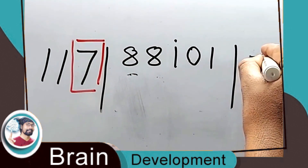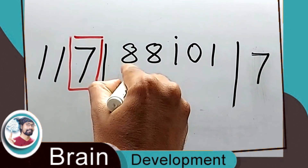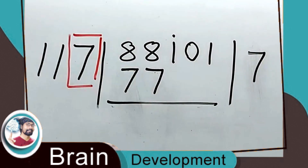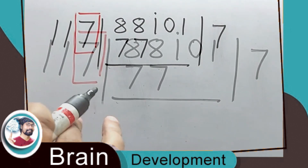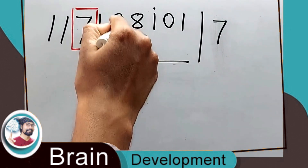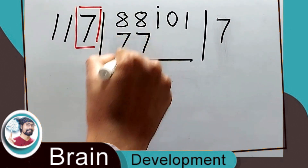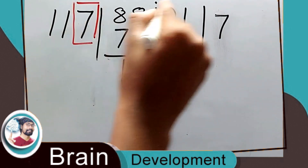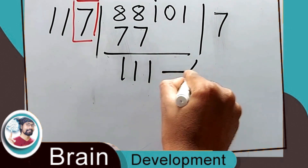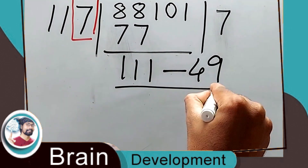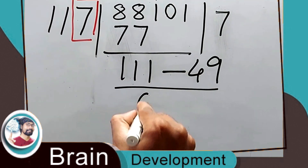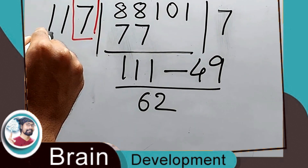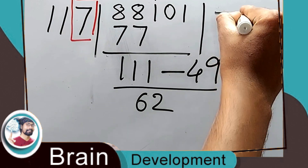We went for 8, but now we'll go for 7. So 7 times 11 is 77. This is the trick — and if it's still not working, go further down. So 88 minus 77 is 11. This 1 comes down — seven sevens are 49 — so 111 minus 49 is 62.